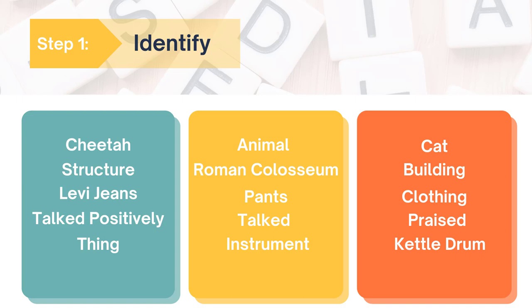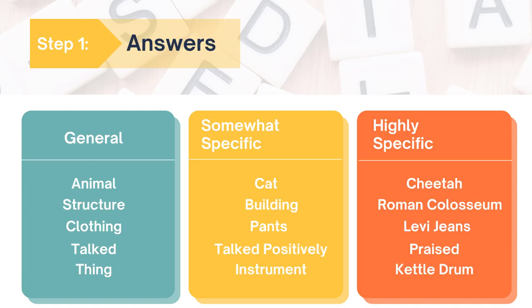Go ahead and pause this video while you do that. Let's take a look at some possible answers. You can see that animal, structure, clothing, talked, and thing are more general. And the highly specific versions are cheetah, Roman Coliseum, Levi jeans, braised, and kettle drum.